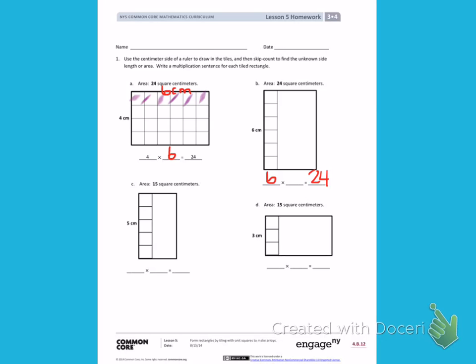If I count by 6s, I can count until I get to 24 to see what my missing measurement is. So I can count 6, 12, 18, 24. There are 4 6s, meaning the top measurement would be 4 centimeters, giving me a second measurement of 4.